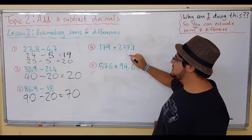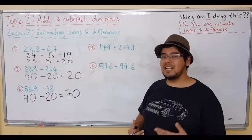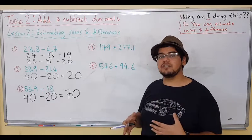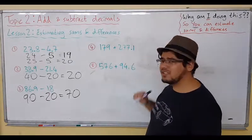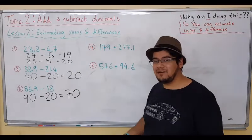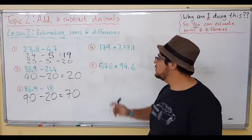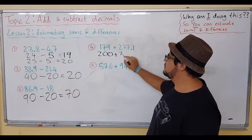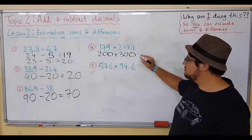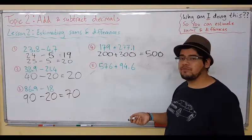179 plus 277.1. We're now working with much bigger numbers. Round to the nearest hundred or the nearest benchmark number. Benchmark numbers are like 100, 150, 200, or any of the numbers which you can see which are compatible. This one I could change to 180 plus 280, but I don't want to work with those kind of numbers. I just want a quick estimate. I want to be done with this in a second, so I'm going to change this to 200 plus 300. Can you see that? 179 is so close to 200, and 277 is so close. As an estimation, it's going to be somewhere near 500.